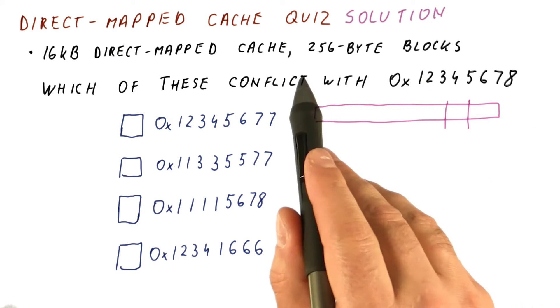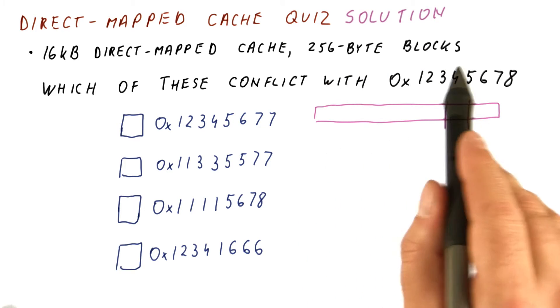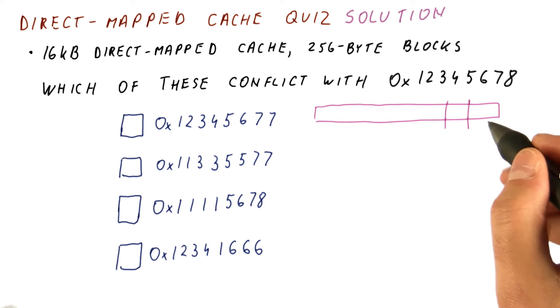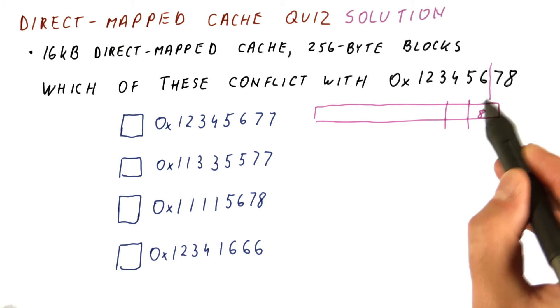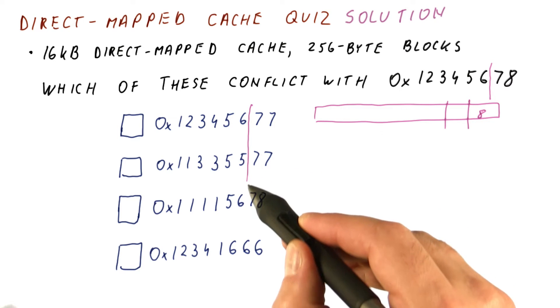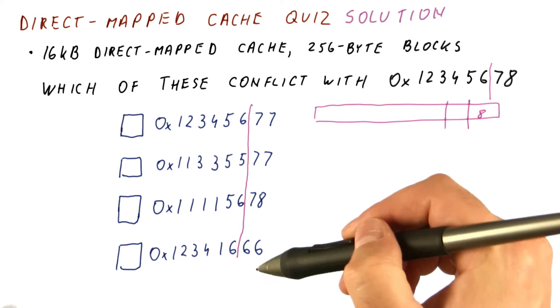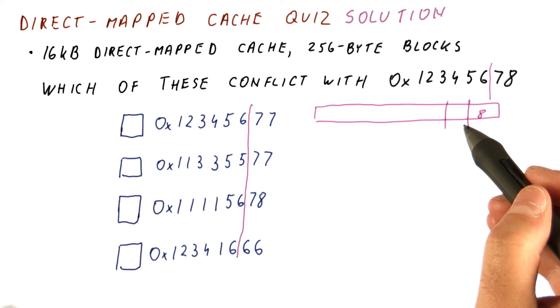In this particular cache, a 256 byte block size means there are eight bits to the block offset. In hex, conveniently, that means the least significant two digits are the offset, and we can safely ignore those because they're not part of the index.